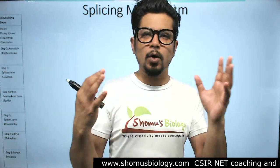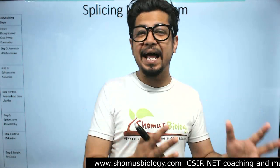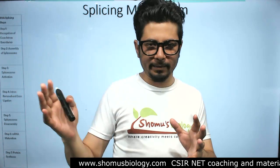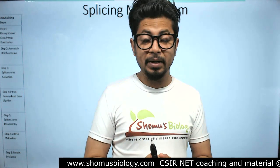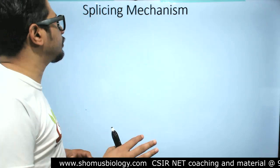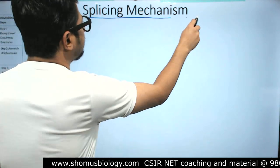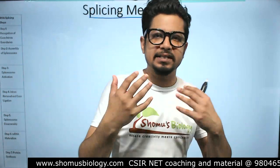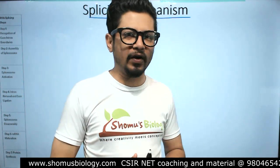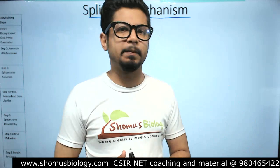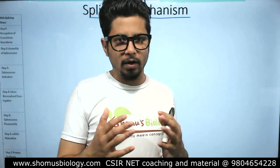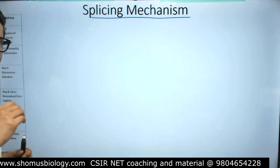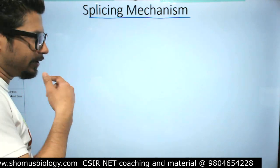We have talked about all the other processes in other videos. I want you to watch those videos in my playlist on eukaryotic RNA processing. In this particular lecture, we are going to focus on the splicing mechanism — what RNA splicing is, how it is done, what its constituents are, what types exist, and what the mechanism is.